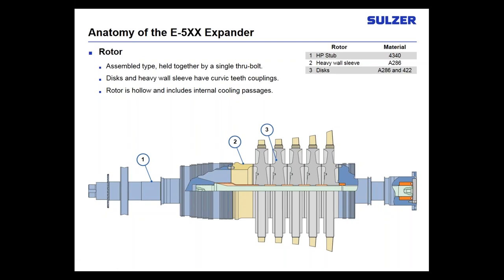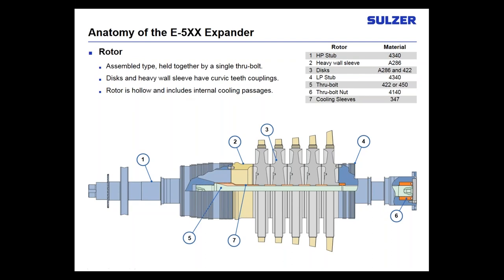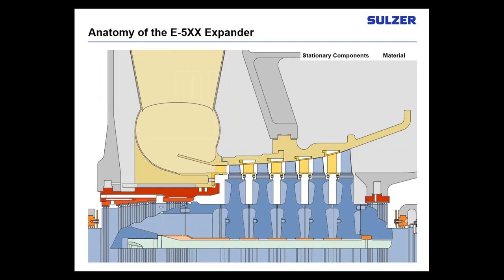The rotor consists of an HP stub, a heavy wall sleeve, and our discs. Interestingly, these discs can be made out of either A286 or 422 — it depends on the machine. Some machines use 422 throughout all the discs, some use A286 throughout, and some have a combination of the two materials, depending on the application. We also have the LP stub and our through bolt — with a choice of materials, 422 or custom 450, which we'll cover later. The through bolt nut is responsible for creating the bundle crush. The cooling sleeves allow space between the through bolt and the discs so cooling air can flow through, and finally, our rotating blades.